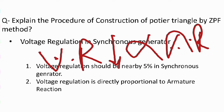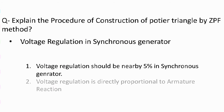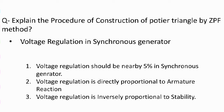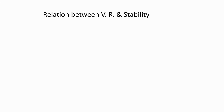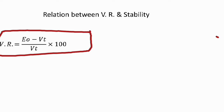The third point is that voltage regulation is inversely proportional to stability. This is a deep and important topic. Voltage regulation = (E0 − VT) / VT × 100, where E0 is the open circuit voltage and VT is the terminal voltage or full load voltage. How is voltage regulation dependent on stability?